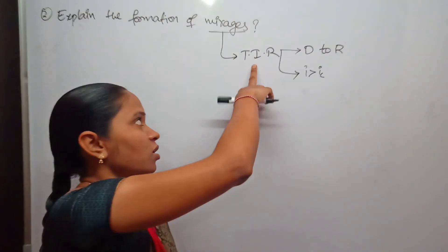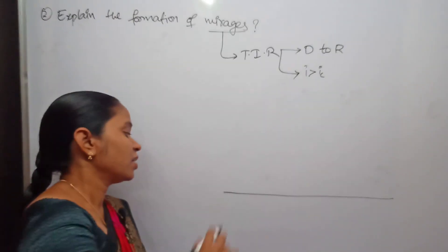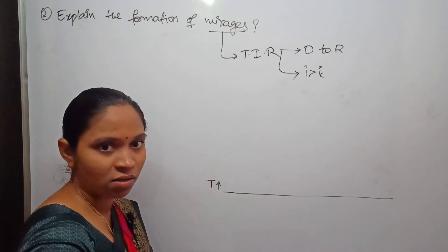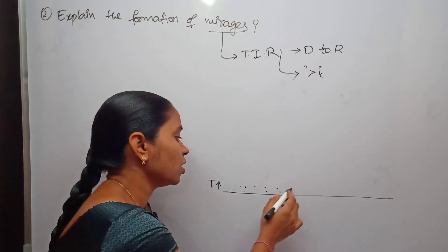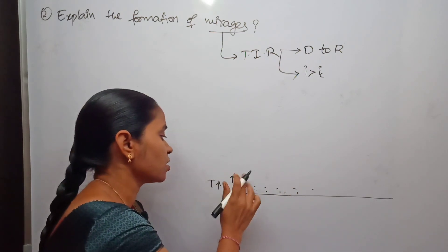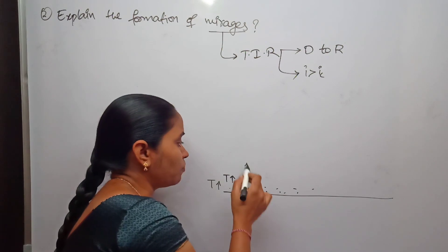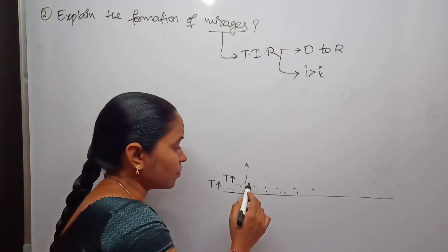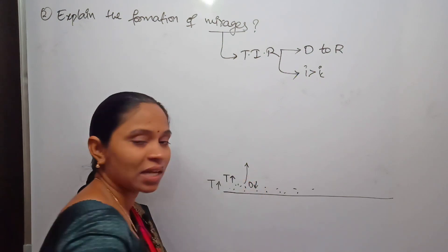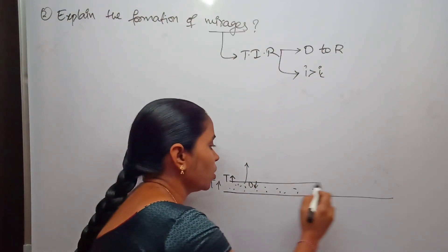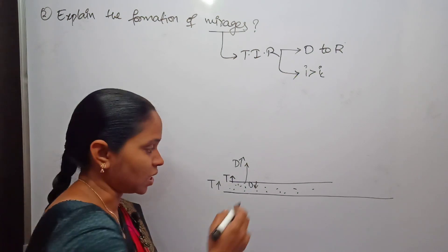Because of total internal reflection, mirages are formed. If you assume that this is the surface of the earth — in summer, the temperature of the surface of the earth increases. As a result, the temperature of the air near to the surface of the earth also increases. Because of the increase in temperature, the air particles move in an upward direction, and the density near the surface of the earth decreases, while the density of the air layer above increases.